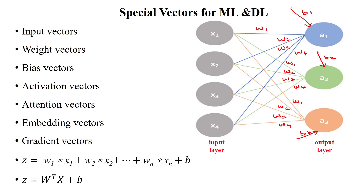Hello everyone. Here we will discuss the special kind of vectors which are very useful for processing ML and DL applications. Whenever we take the equation for given inputs, we use z equal to w1*x1, w2*x2, etc., wn*xn plus bias. The w represents the weight vectors, x represents the input in the given dataset, and b represents the bias. Any kind of machine learning or deep learning algorithm using this linear sum can be represented as z = w transpose x plus b.